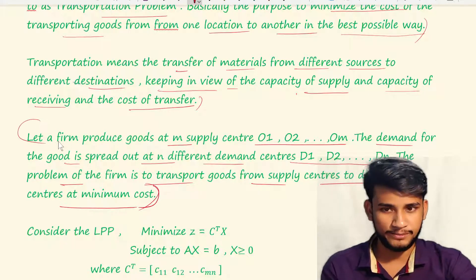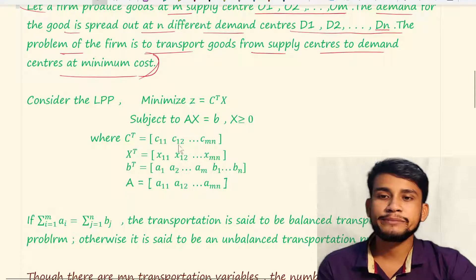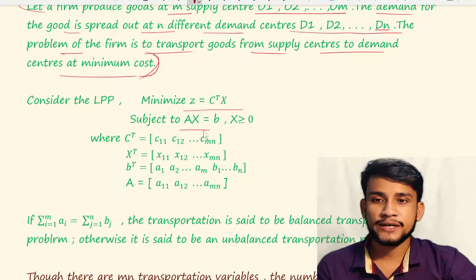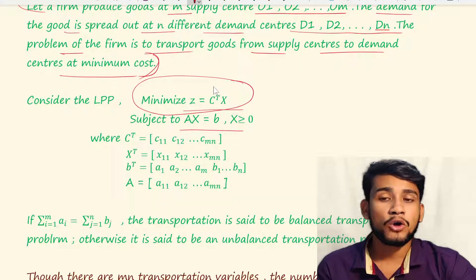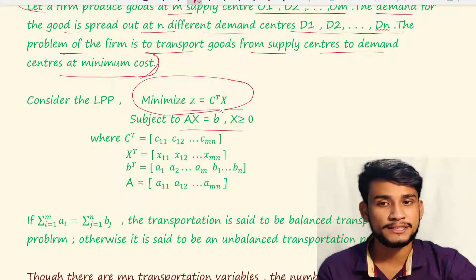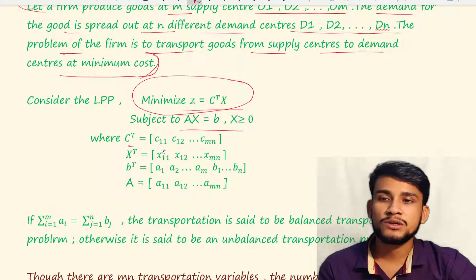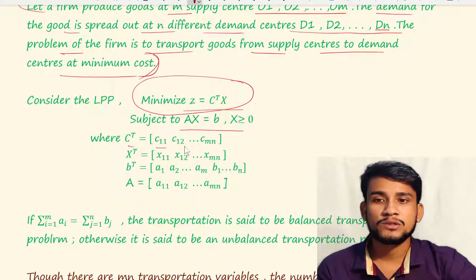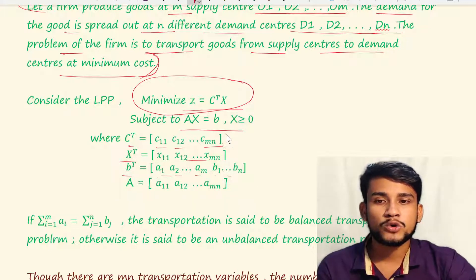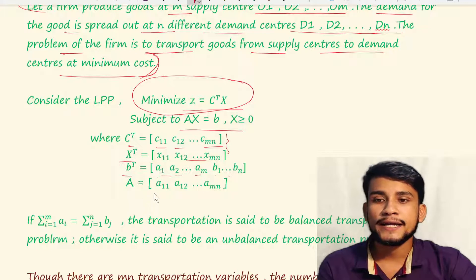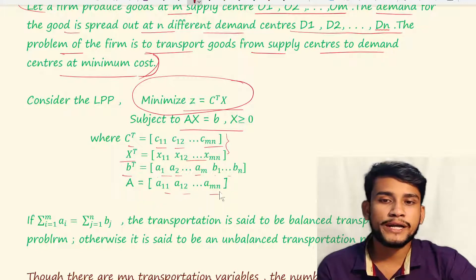Consider the LPP: minimize Z = C-transpose X, subject to AX = B. In the transportation problem, the objective function is always minimized. Here, C-transpose is the cost matrix with entries c11, c12, ..., cmn; X-transpose has entries x11, x12, ..., xmn; and B-transpose contains a1, a2, ..., am, b1, b2, ..., bn.